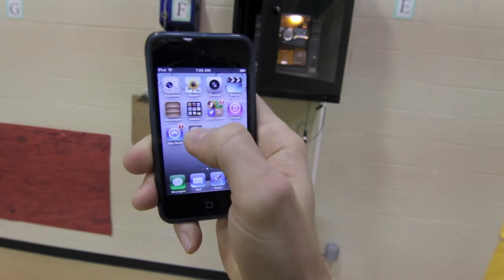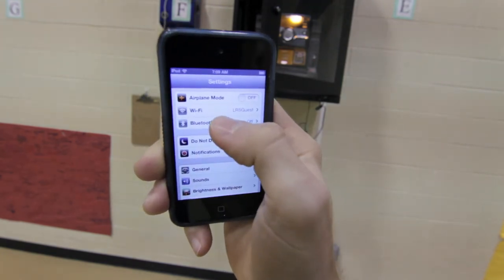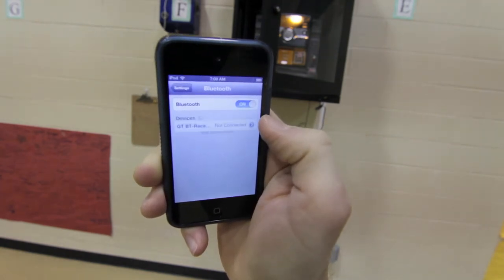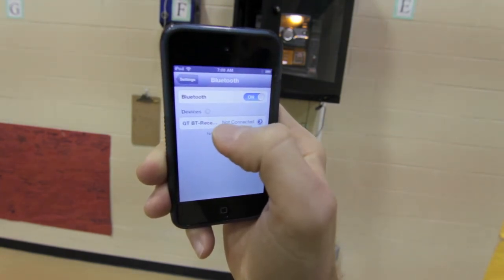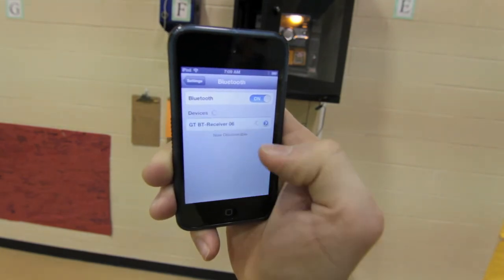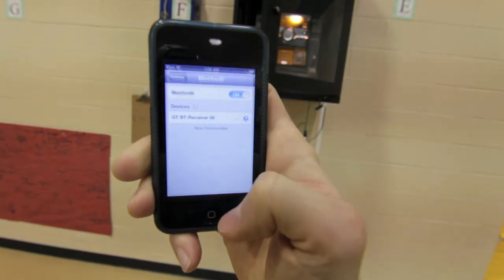You can click on settings and you're just going to go to your Bluetooth, turn your Bluetooth on if it's not already on, and then your box that you just plugged into the stereo—that's your receiver, your Bluetooth receiver—you're just going to click on that. That will allow you to connect.